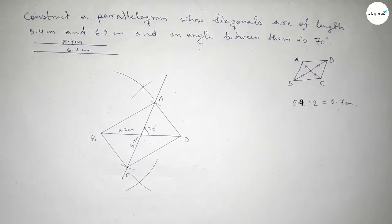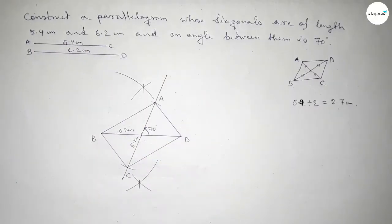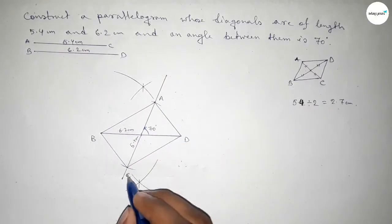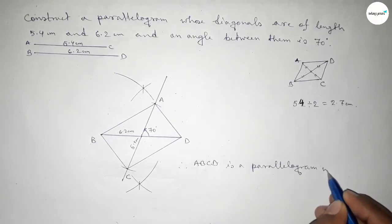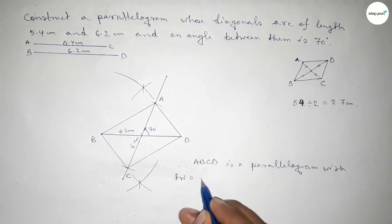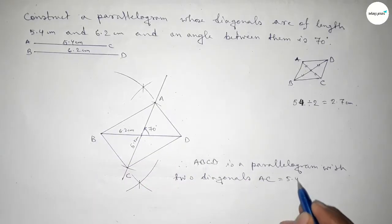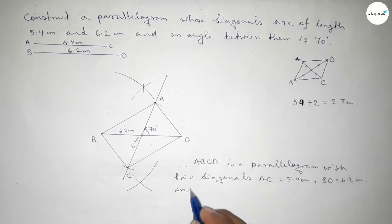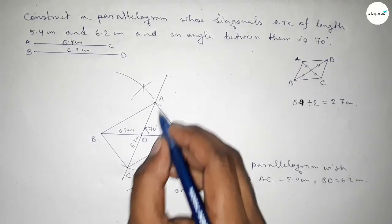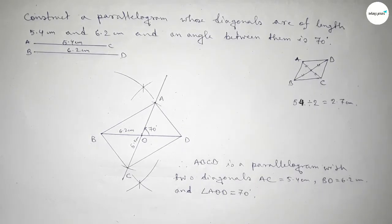The diagonal BD equals 6.2 centimeters and diagonal AC equals 5.4 centimeters. Therefore, ABCD is a parallelogram with diagonals BD equal to 6.2 centimeters and AC equal to 5.4 centimeters, and with point O as the intersection, angle AOB equals 70 degrees. That's all — thanks for watching!